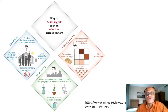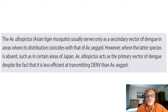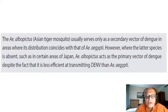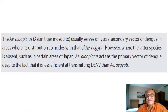Aedes albopictus, the Asian tiger mosquito, usually serves only as a secondary vector of dengue in areas where its distribution coincides with Aedes aegypti. However, where Aedes aegypti is absent — such as in certain areas of Japan — albopictus acts as the primary vector of dengue, despite being less efficient at transmitting the dengue virus.